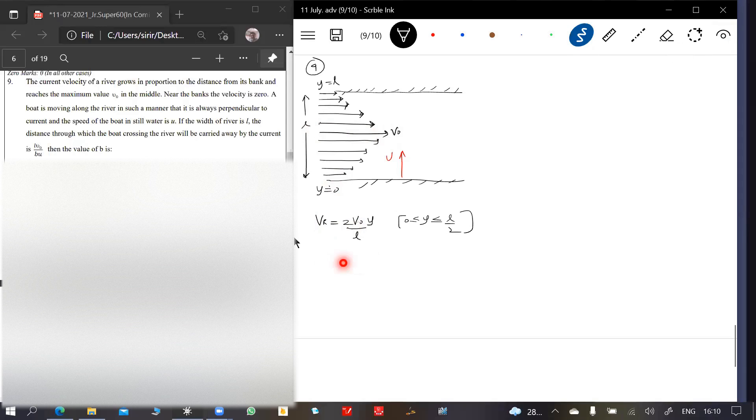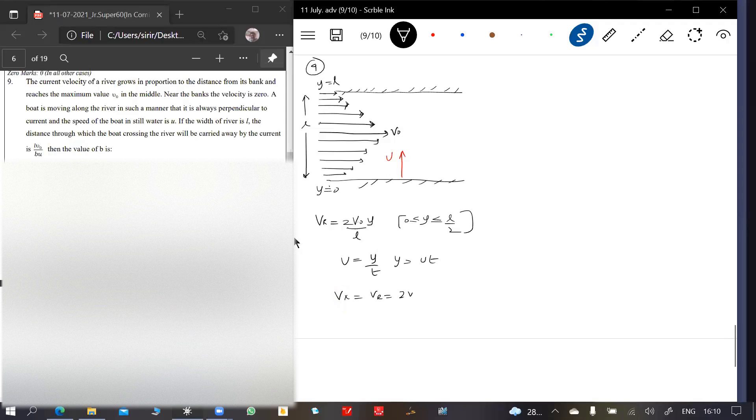So Vr equal to, what is U equal to? It should be equal to Y by T. Y equal to U, I am going to adjust things. This is the velocity of the river along X axis, so you write it here: Vx is equal to Vr which is equal to 2V0 by L into Y. Vx equal to 2V0 by L, Y is equal to UT.